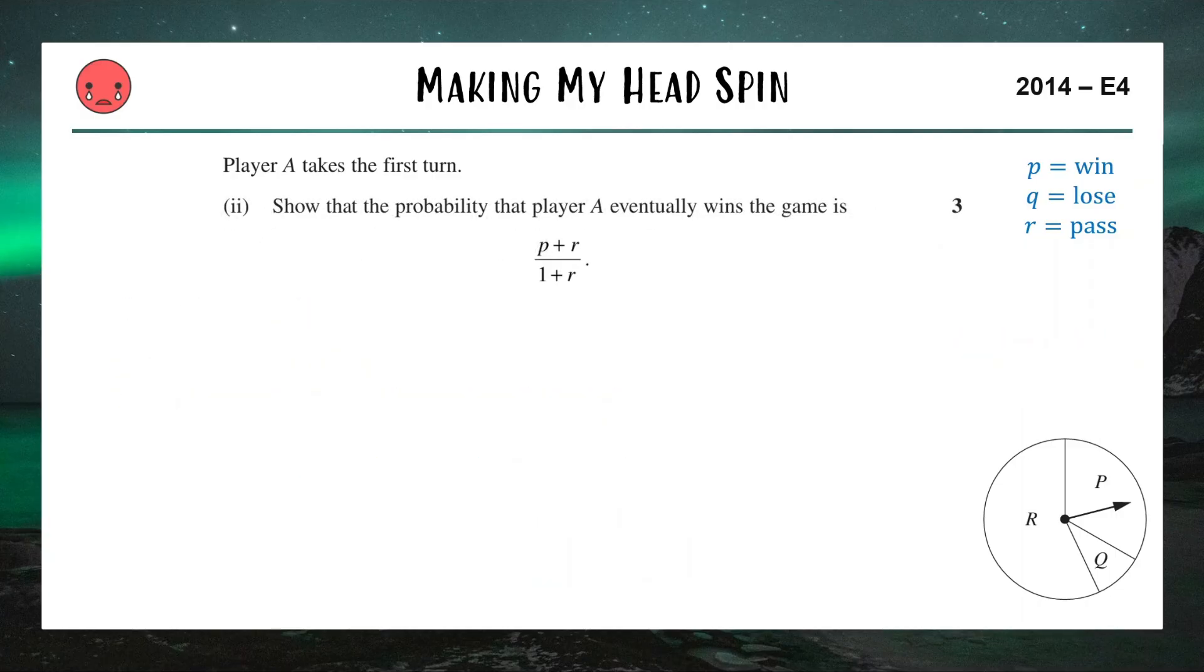On to the last part of the question. We have player A taking the first turn. This one's worth three marks and it is much more challenging. Show that the probability that player A wins eventually is given by P plus R divided by one plus R. So if I'm player A and I want to win eventually, it's going to be a similar scenario to the first question where either I'm going to win or I'm going to pass it to you and then you fumble it. Or if I'm passing to you, you could then pass it back to me and then we could just repeat that scenario again.